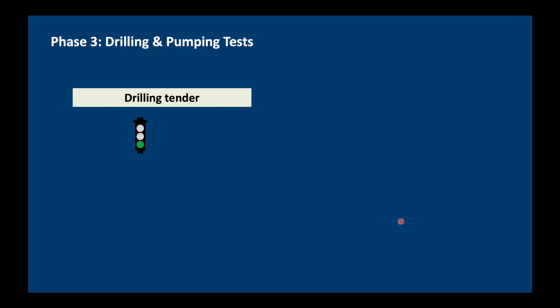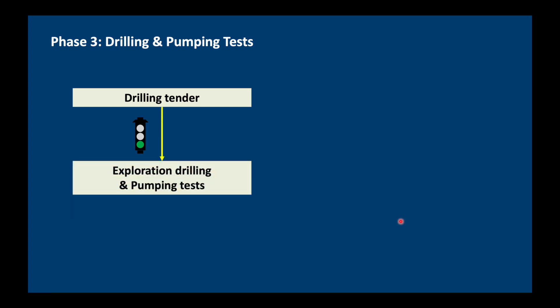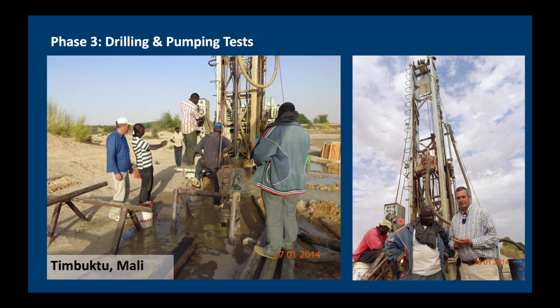We launch our drilling tender, and if everything is acceptable we award it to a drilling contractor. Do not be afraid to not award this tender — if you don't have a good contractor, don't go ahead with the project. You can always re-tender your drilling until you have the right company and the right person to carry out the drilling. Because if you don't have a good drilling contractor, they're going to damage your wells and you will not have a successful project. Here are some pictures from Timbuktu in Mali. At this stage of the project, the most important person is not you — it's the driller. Because if you have a good driller, he's going to do what you ask him to do and drill some good wells for you. If you have a bad driller, he's going to damage your wells, they'll collapse, and he'll say there's no water and the project will fail. Show some respect for the driller and make sure you establish a good relationship with him.